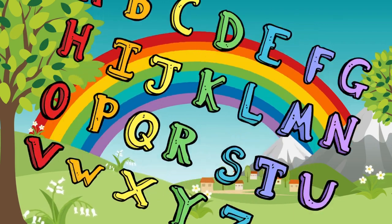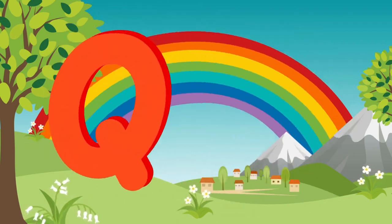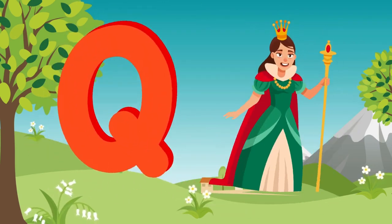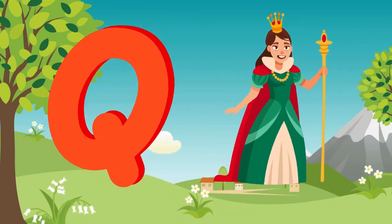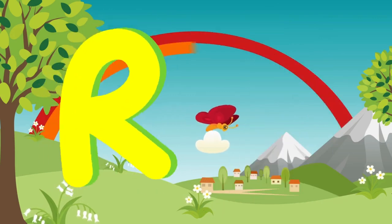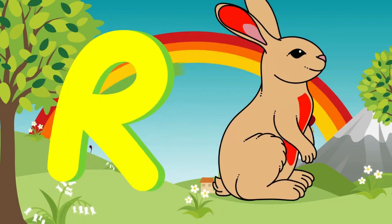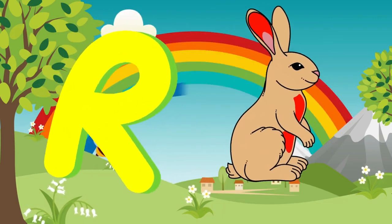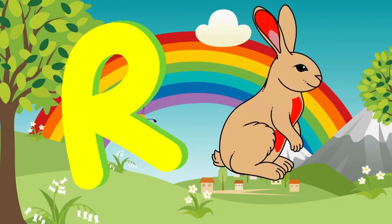Q is for queen, k-k-queen. R is for rabbit, r-r-rabbit.